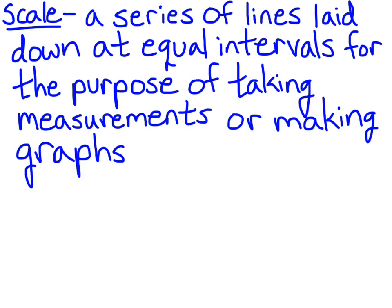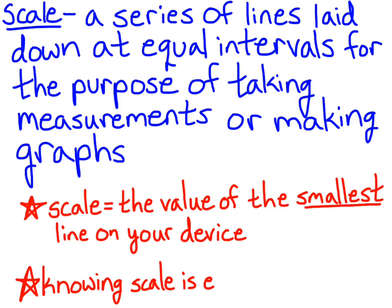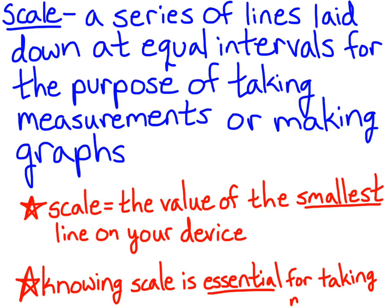When we talk about scale, we're talking about when you're using a measuring device that is not an electronic device — there are lines generally marked on the device. When we're figuring out scale for a measuring device, what we're figuring out is what the value of the smallest lines on your device represent. Scale is the value of the smallest line on your device. This is essential for taking proper measurements; if you don't know the scale of your measuring device, you won't be able to take accurate measurements.